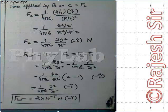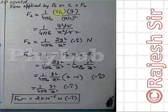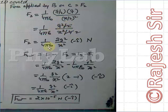Now let's find the force applied by B on C, which I am calling F2. The charge of C is Q/2 and the charge of B is Q. Using Coulomb's law, F2 = 1/(4πε₀) × Q × (Q/2) / (x/2)². Rearranging and solving: 1/(4πε₀) × Q²/2 / (x²/4) = 1/(4πε₀) × 2Q²/x². This force is directed towards the left, in the −î direction.